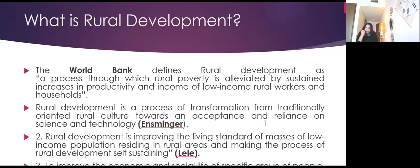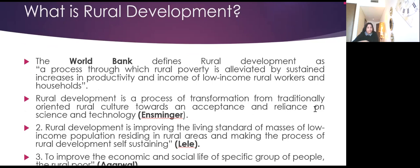By Esminger, rural development is defined as a process of transformation from a traditionally oriented rural culture towards an acceptance and reliance on science and technology. Where rural areas might rely on traditional or indigenous techniques, the aim is to introduce science and technology so that productivity and production also increase. Next, Lele defines rural development as improving the living standard of masses of low-income population residing in rural areas and making the process of rural development self-sustaining.